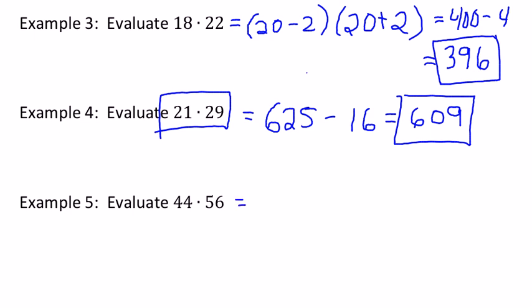The last one recognizes that 44 and 56 are both 6 units away from 50. So 50 squared is just 25 adding two zeros. And then 6 squared is just 36.